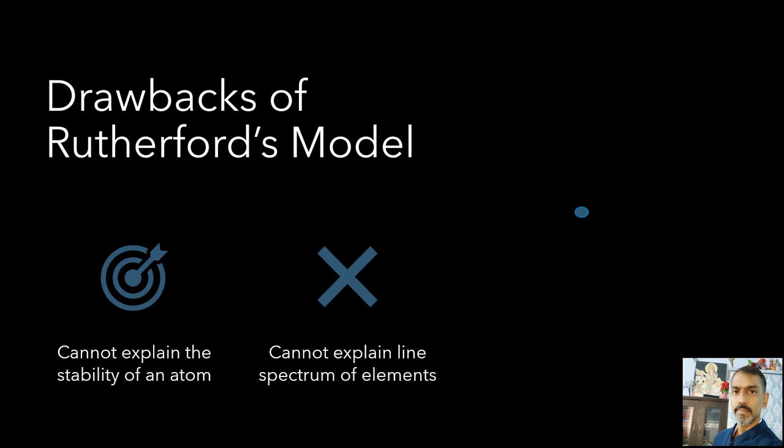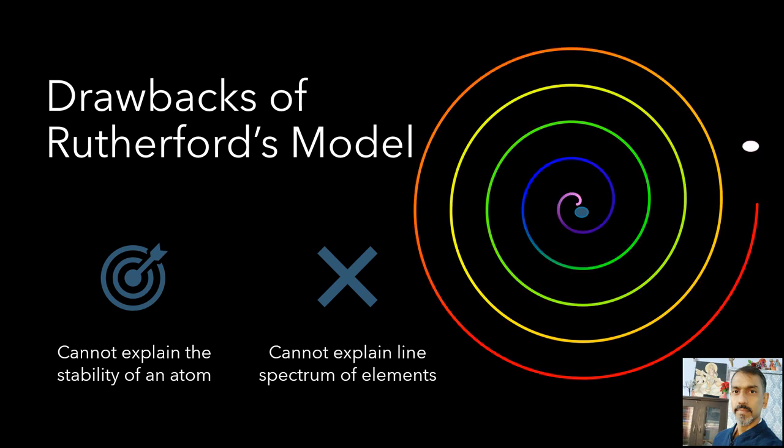According to electromagnetic theory, an accelerated charged particle always radiates energy. The negatively charged electron revolving around the nucleus possesses centripetal acceleration and would lose its energy continuously. The radius of its orbit therefore would go on decreasing, and it would finally spiral into the nucleus, resulting in ultimate catastrophic collapse of the atom, that is plop. But in practice, atoms of almost all the elements are quite stable and do not collapse.